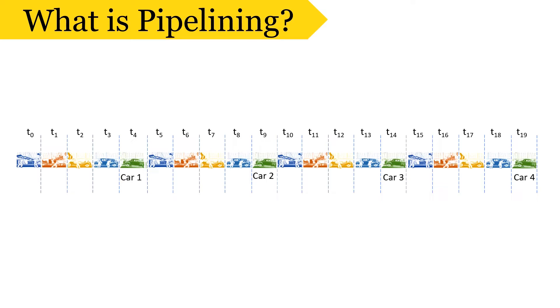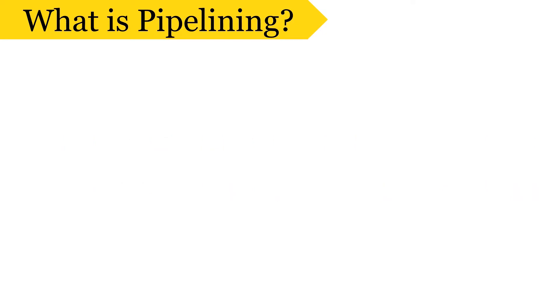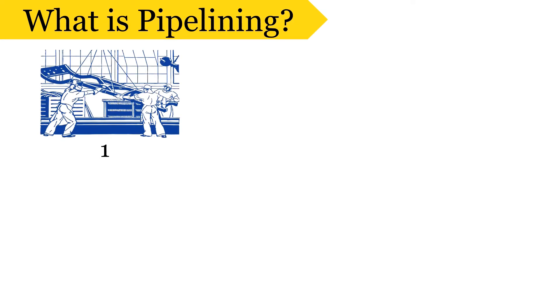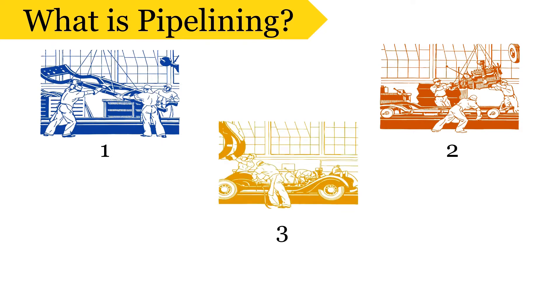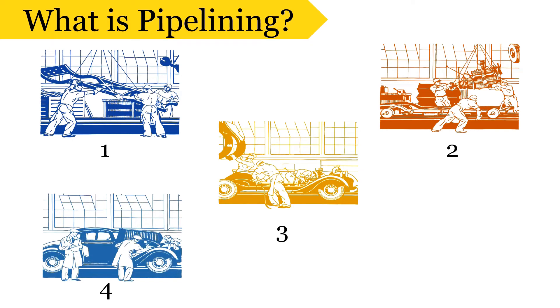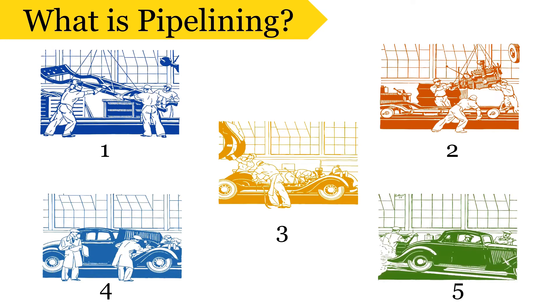Then according to the concept of pipelining, we can organize the assembling of multiple cars simultaneously. In this process, we will require 5 different groups of workers where each group will perform a dedicated task. Group 1 will only be preparing the car chassis, group 2 will only be attaching engine to this chassis, group 3 will only be adding body to this chassis, group 4 will only be painting the car body and group 5 will only perform the final check before delivering the car.